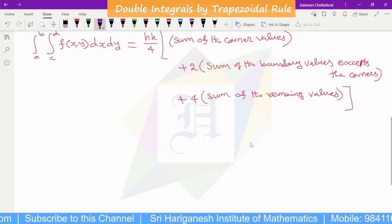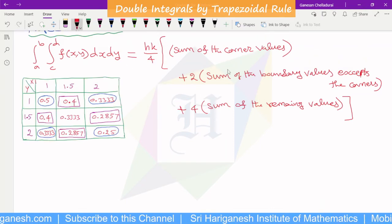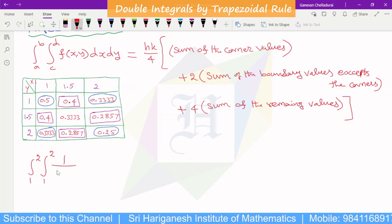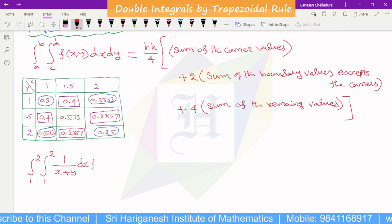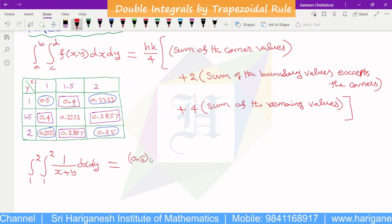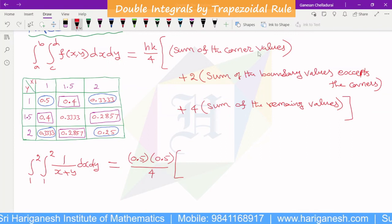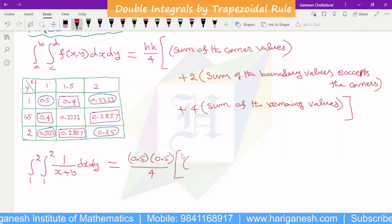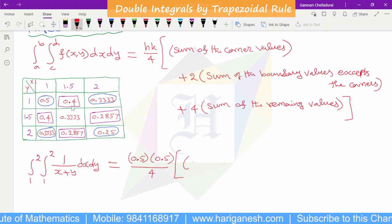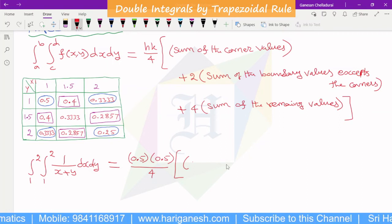Just substitute in the formula using the table. Integral 1 to 2, Integral 1 to 2, 1 by x plus y, dx dy. This is equal h k, h value k, k value 0.5, h value 0.5, k value 0.5, divided by 4. Sum of the corner value, sum of the boundaries except corner, 4 times the value, sum of the remaining. Corner value add, 2 times of boundary except corner value add, 4 times of remaining.